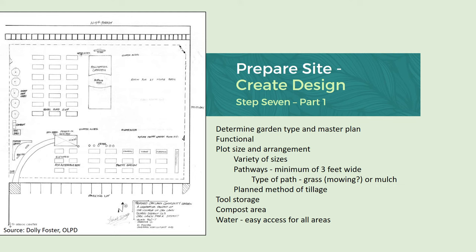When preparing your site, look at the plot size and arrangement. Pathways should be a minimum of three feet wide so you can fill those with compost from year to year. You'll want at least five feet wide for ADA accessibility. If the paths are grass and you don't have someone to mow or it's too much maintenance, you could choose a ground cover like Dutch clover or simply mulch it.